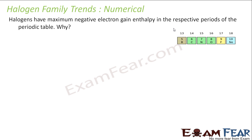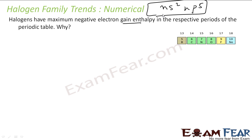Let's take a numerical on the trends. Halogens have the maximum negative electron gain enthalpy in their respective period. Why? Because halogens have the electronic configuration ns²p⁵ — they need only one electron to be stable and thus have very high electron gain enthalpy. For example, lithium has one extra electron to give, beryllium has two.